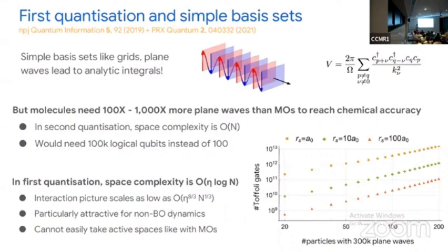The difficulty is that this isn't really taking advantage of active spaces like molecular orbitals. The idea with the active space is that if you have an atom with core electrons and some outer electrons, the core electrons are typically always going to be in that orbital, so you don't really need to simulate them.